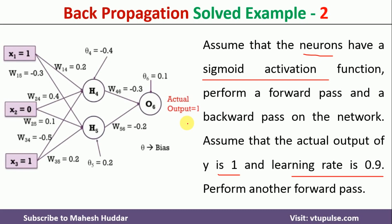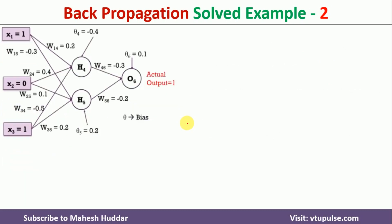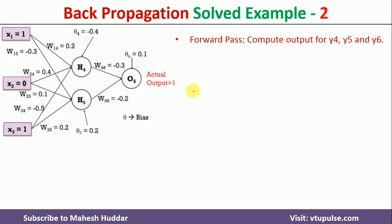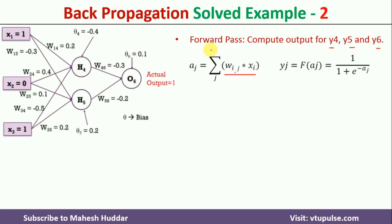Now we understand how to propagate this input through the network. First, we calculate the output at h4 and h5. Once we calculate the output at h4 and h5, these are given as input to o6 so that we can calculate the output at o6. So we have to calculate the output at h4, h5, and o6 — denoted by y4, y5, and y6. To calculate the output at any neuron, first we need to calculate the summation term, which is wij multiplied by xi, then apply the sigmoid function.